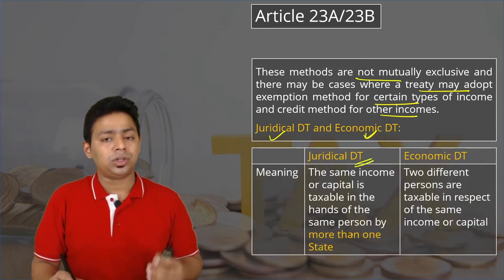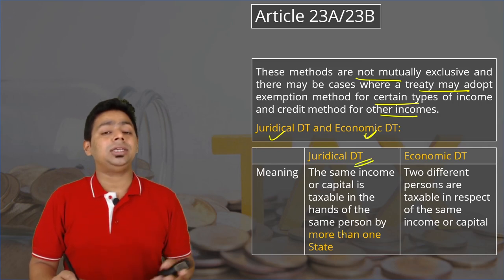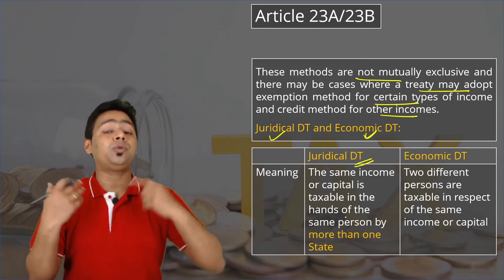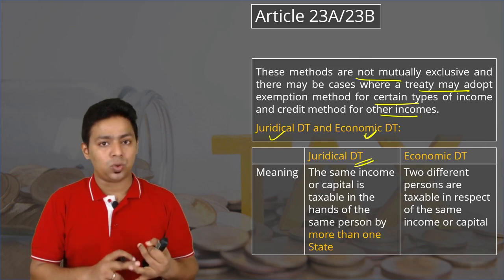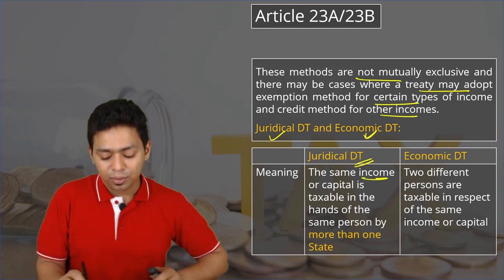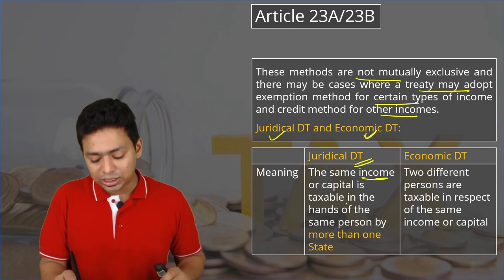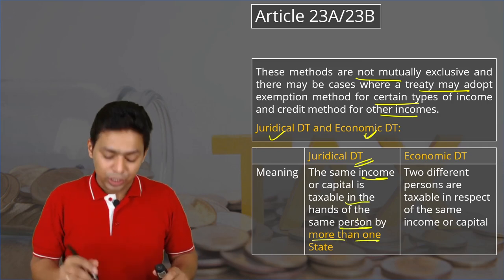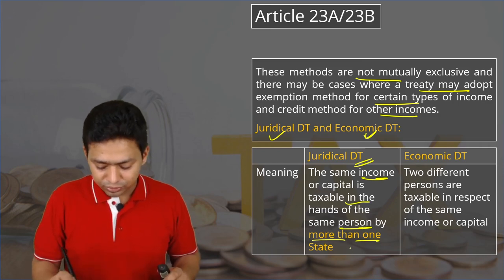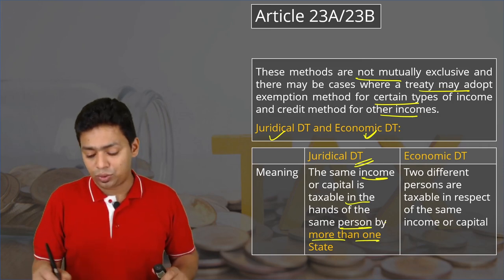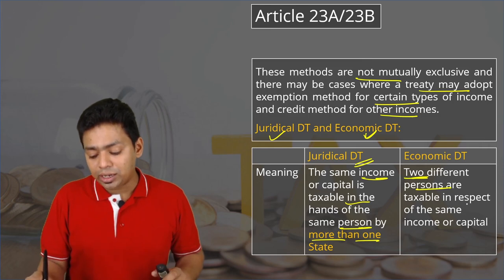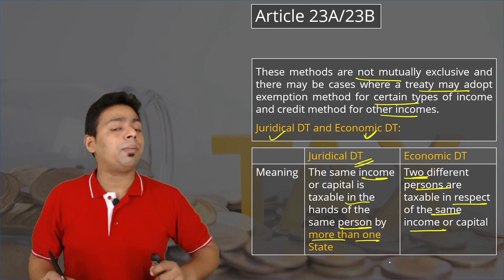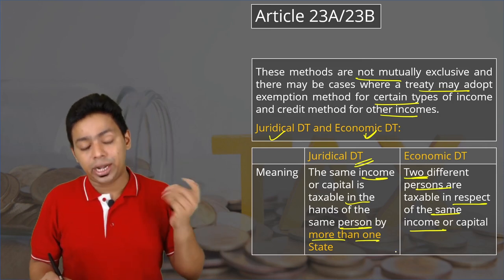Jurisdictional double taxation means the same income is taxable in the hands of the same person in two different countries, because of two different rules — source rule of taxation and residence rule of taxation. Economic double taxation occurs when the same income or capital is taxable in the hands of two different persons in more than one state — that is, two different persons are taxable in respect of the same income.